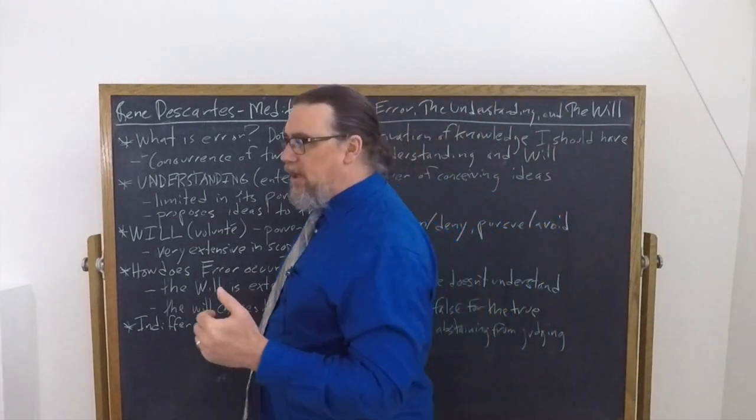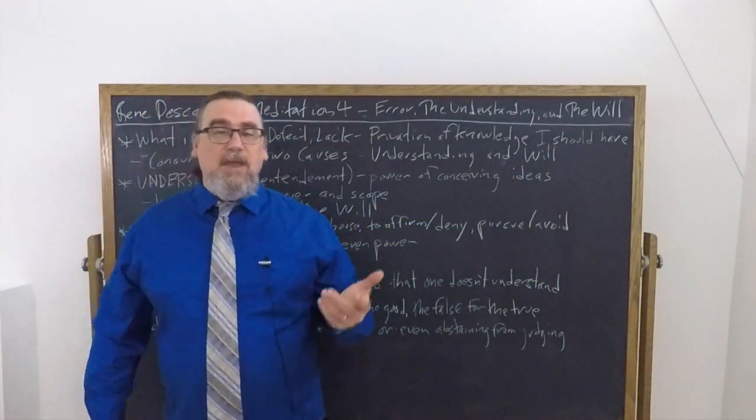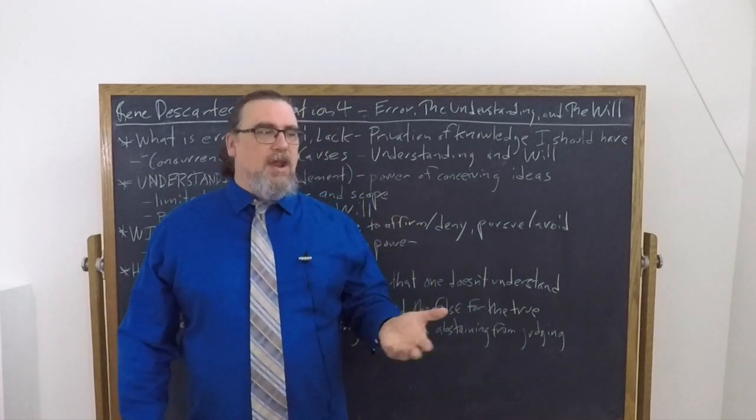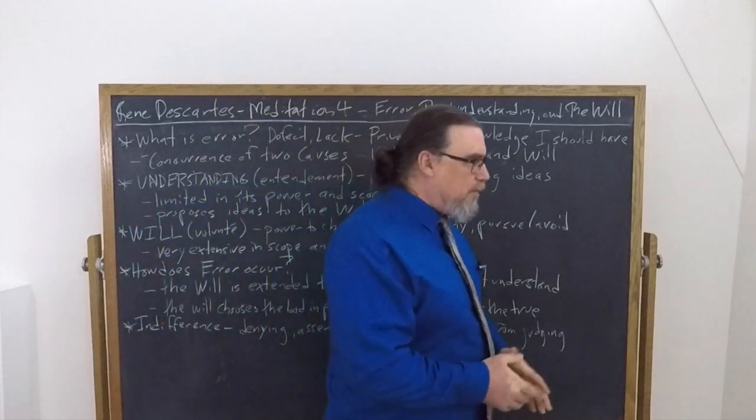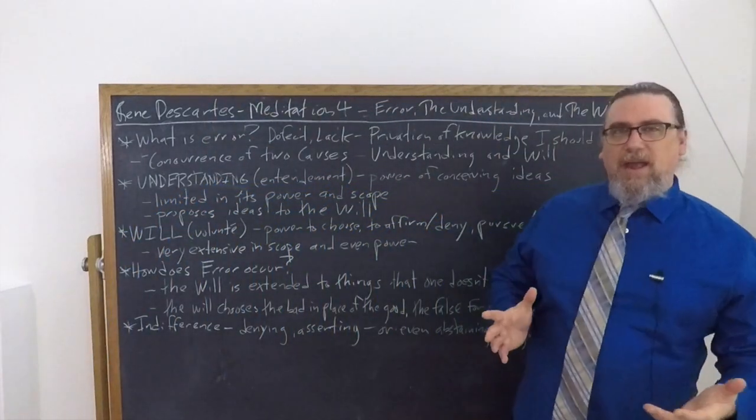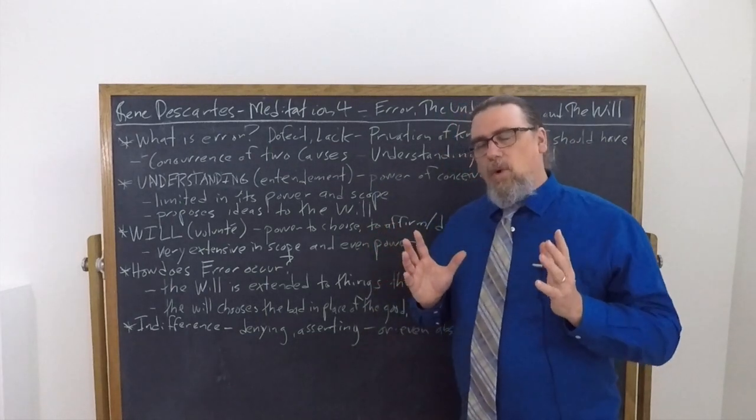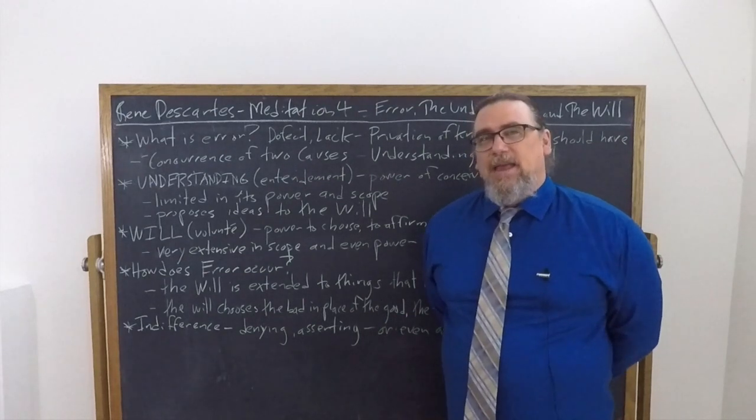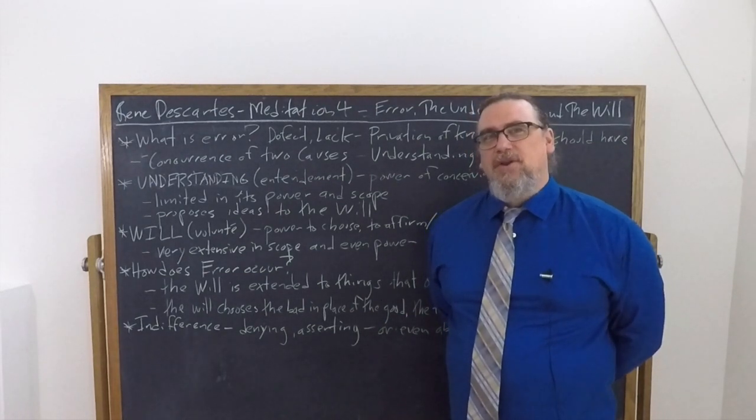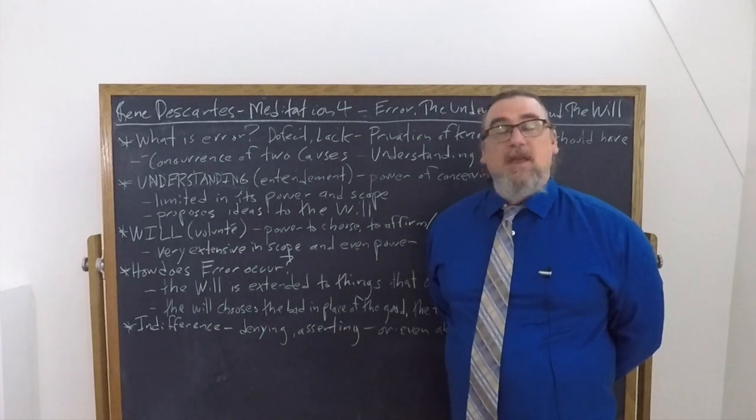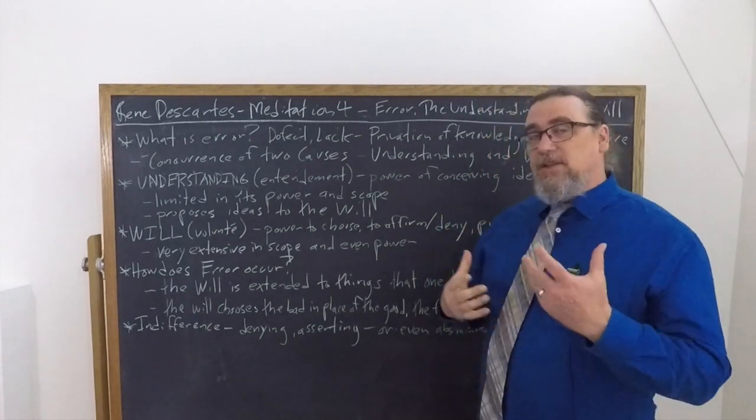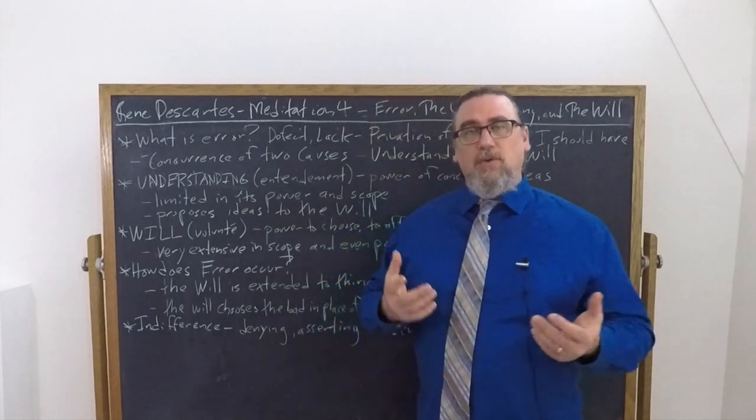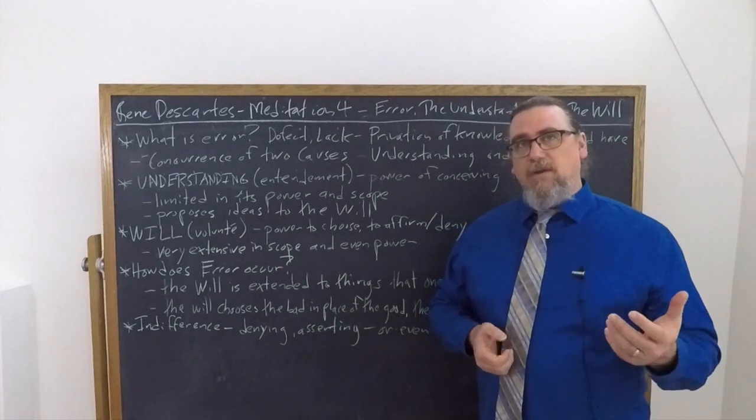So a classic example is being blind. Being blind is a privation for a human being, but it is not for an animal that lacks eyes or a plant. A plant isn't blind or sighted. So what is the privation of? What's lacking is knowledge, connaissance in French, that should be there in the mind, in the human mind.